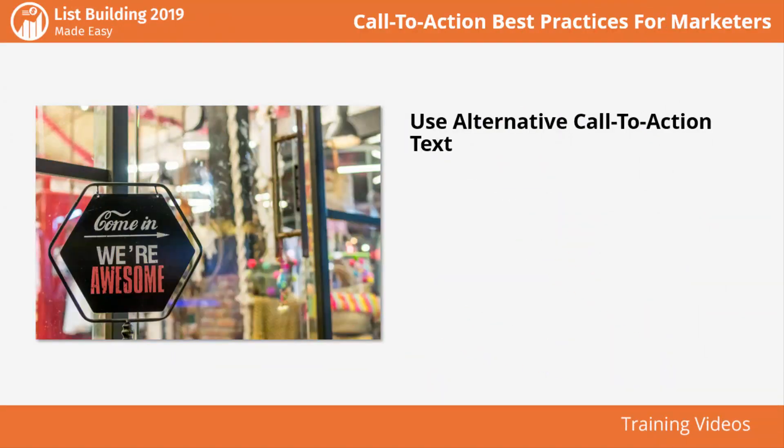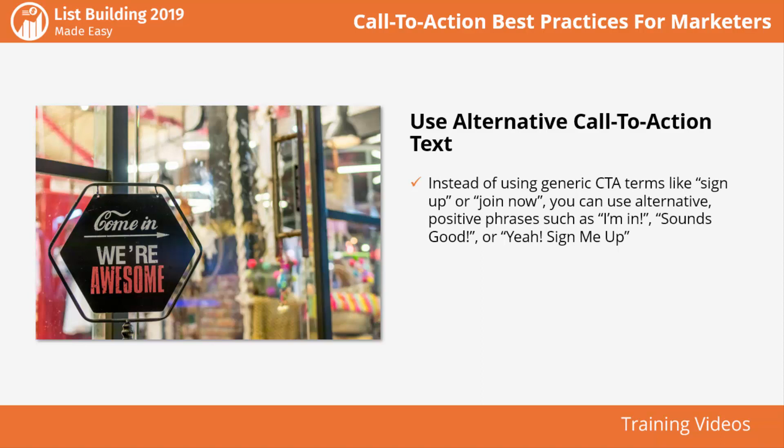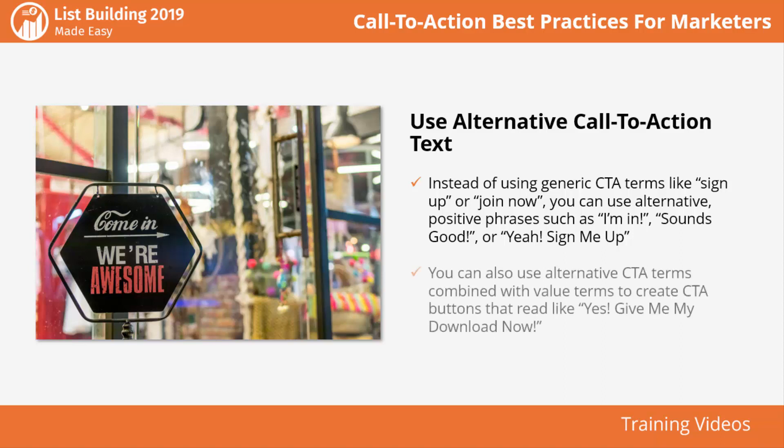Use alternative call to action text. You can also use alternative terms on your CTA buttons to ease leads into thinking they're not committing to a mailing list, but to a single download or a one-time free content access that can lead to more free stuff. Instead of generic CTA terms like 'sign up' or 'join now,' you can use alternative positive phrases such as 'I'm in,' 'sounds good,' or 'yeah, sign me up.' You can also combine alternative CTA terms with value terms to create buttons that read like 'Yes, give me my download now.'